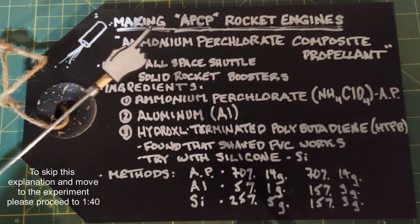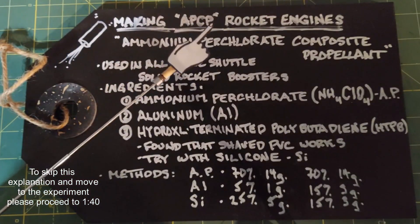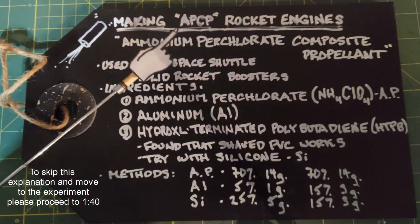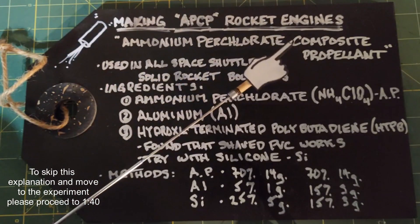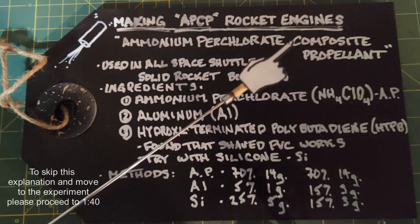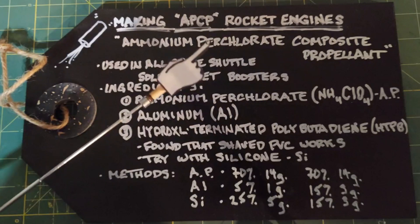We're back to making rocket engines. In this video we're going to look at making APCP rocket engines. APCP stands for ammonium perchlorate composite propellant, and these rocket engines are powerful and they've been around a long time.